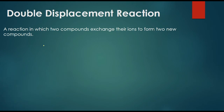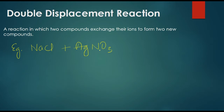This is the reaction in which two compounds exchange their ions to form two new compounds. A displacement reaction happens to be an element of the compound. This is the compound, and this is the compound.